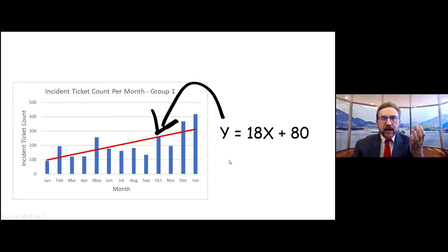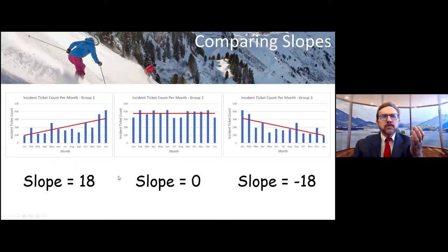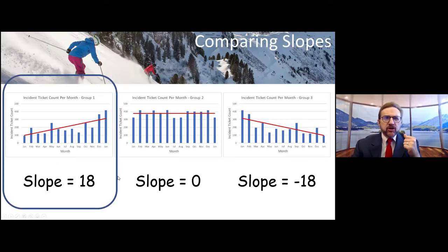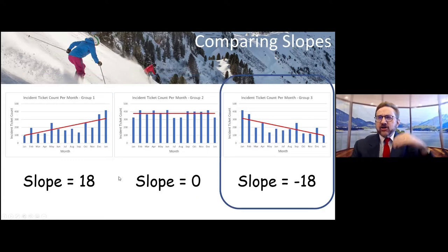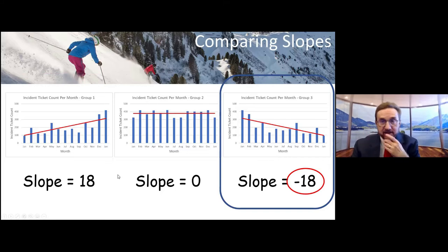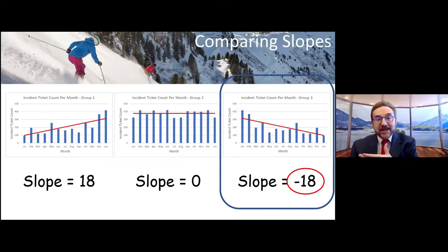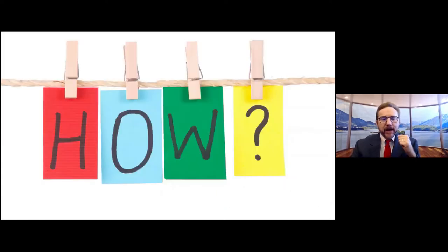Let's look at some examples of lines and their slopes. The one we just looked at has a slope of 18. Here's a line that's flat with a slope of zero. And this line is trending downward over time with a slope of negative 18, meaning there are 18 fewer problems each month. With this as background, let's jump into the how.